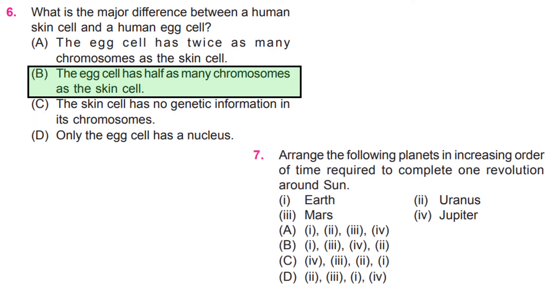Arrange the following planets in increasing order of time required to complete one revolution around the sun: 1. Earth, 2. Uranus, 3. Mars, 4. Jupiter. B, Earth, Mars, Jupiter, and Uranus.